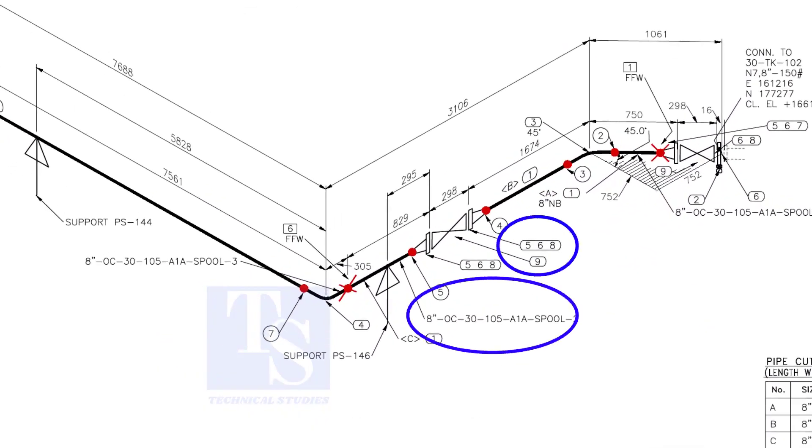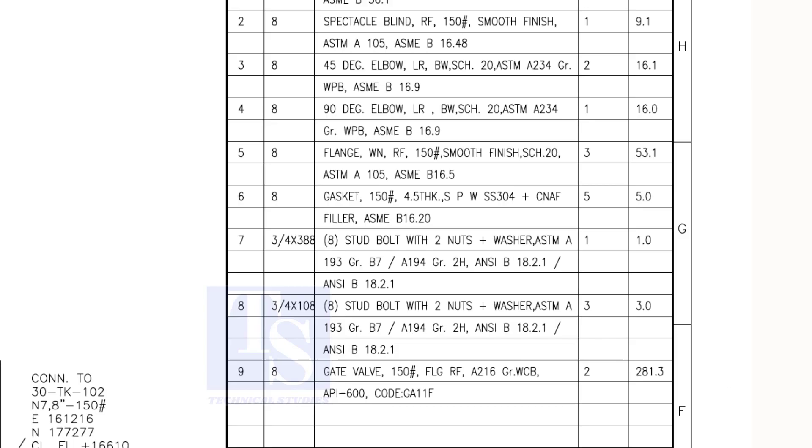In spool number two, check what are the items: five, six, and eight. We already know item number one is pipe. Item number five is weld neck raised face flange. The rating is 150 pound. Item number six is spiral wound gasket, and item number eight is stud bolts.